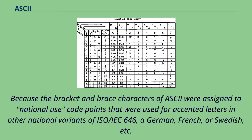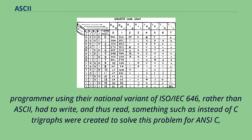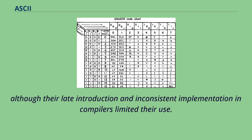Because the bracket and brace characters of ASCII were assigned to national use code points that were used for accented letters in other national variants of ISO/IEC 646, a German, French, or Swedish programmer using their national variant of ISO/IEC 646, rather than ASCII, had to write and read code using trigraph-like substitutions. C trigraphs were created to solve this problem for ANSI C, although their late introduction and inconsistent implementation in compilers limited their use.